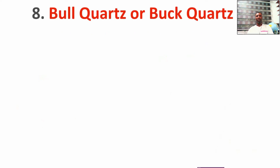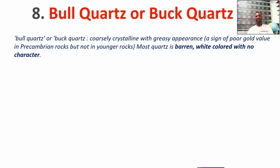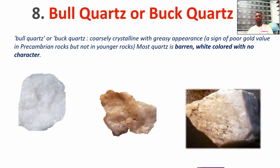Another variety is the bull quartz or white quartz. These quartz have a milky, cloudy, crystalline greasy appearance. This is a sign of poor gold value, especially in Precambrian rocks. In younger rocks, they are very white in nature. Some of them can contain gold but they are not good indicators.